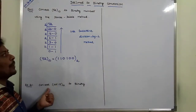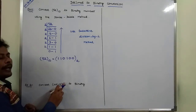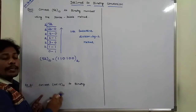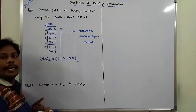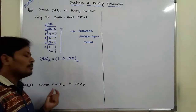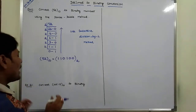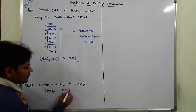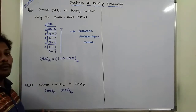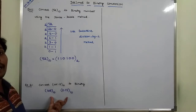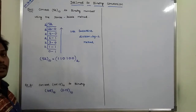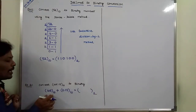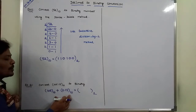Now we go for another example problem: convert 105.15 base 10 into binary. This decimal number contains two parts — one is the integer part and another is the fractional part. We have to solve this problem by dividing it into two subproblems: the integer part 105 base 10 and the fractional part 0.15 base 10. We solve these two subproblems separately.